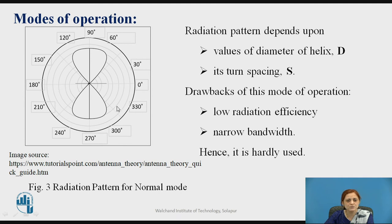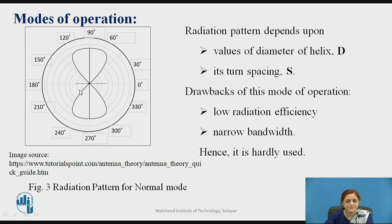For the normal mode of operation, suppose the helical antenna has a number of turns with the axis of the helix at the center. The major radiation pattern is perpendicular to the axis of the helix. Therefore, at 90 degrees and 270 degrees you get the major lobe, and minor lobes are also present. The radiation pattern depends upon the values of the diameter of the helix (capital D) and the spacing between the turns (capital S). The drawback of this mode is low radiation efficiency along with narrow bandwidth; therefore it is very rarely used.